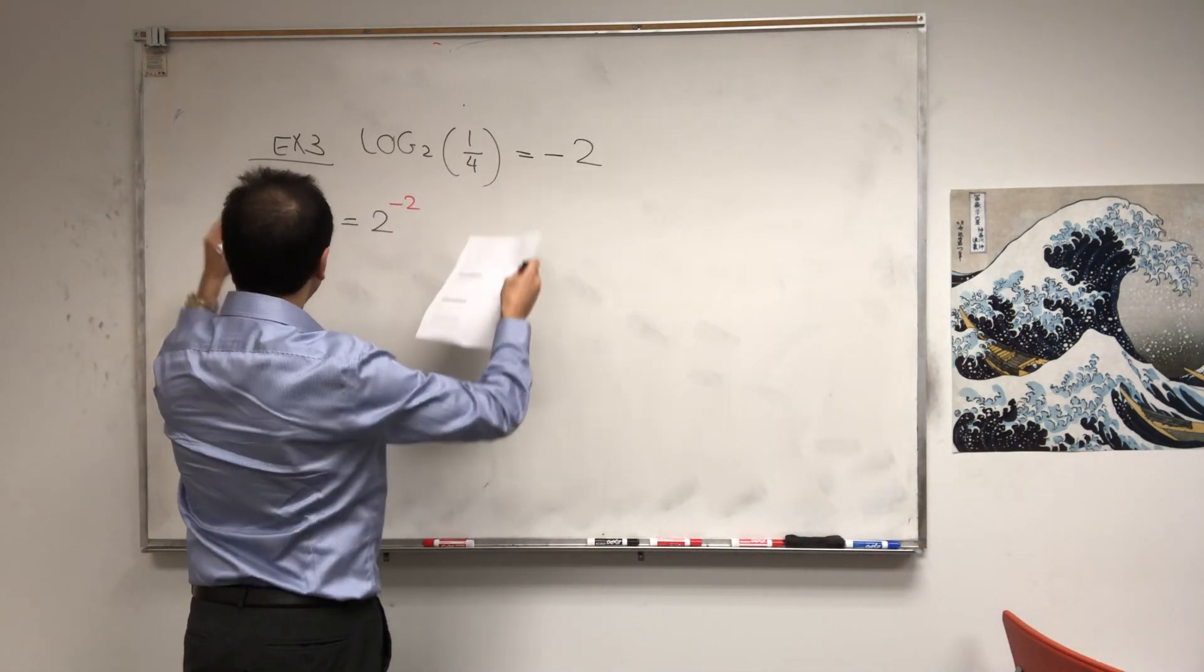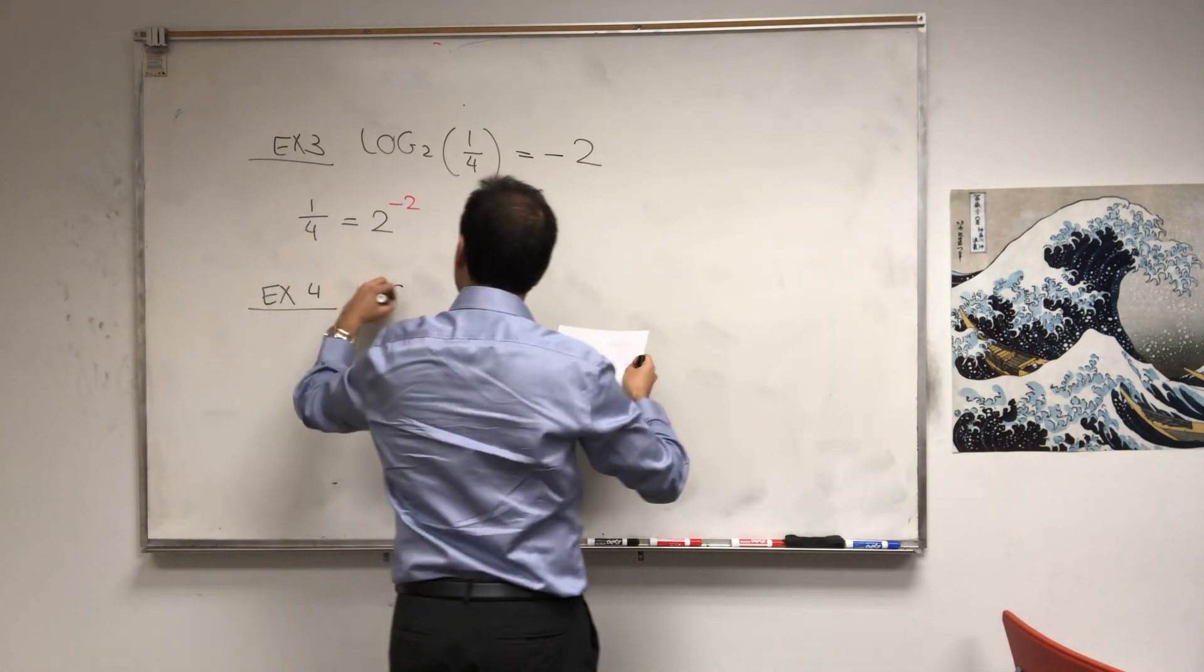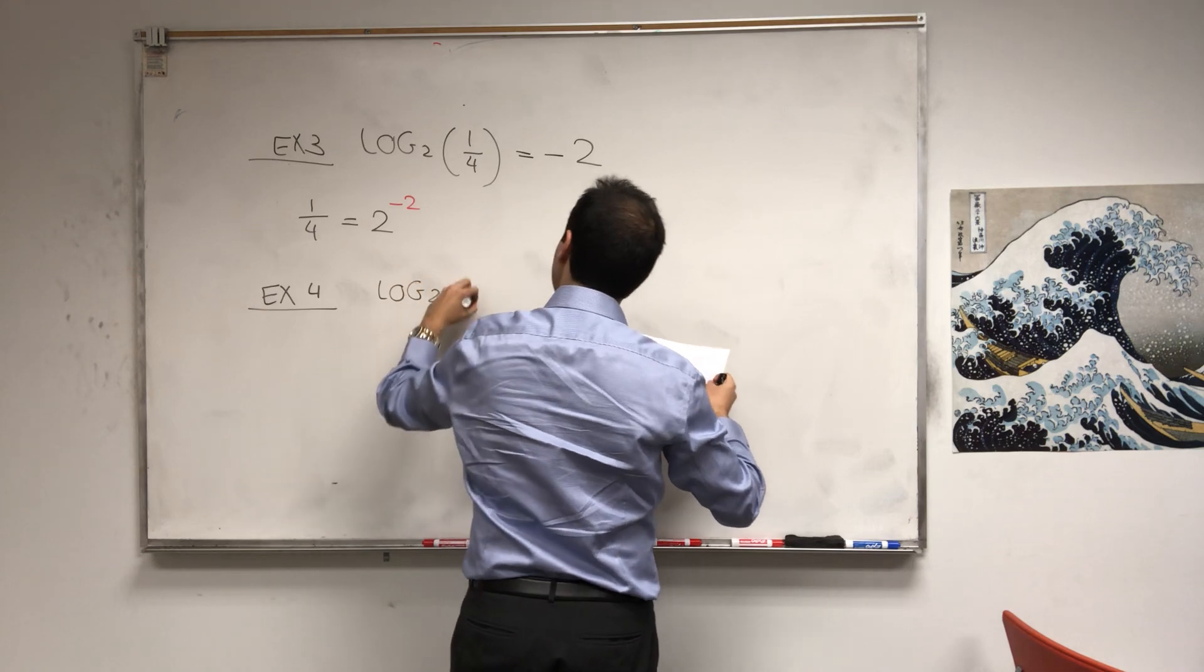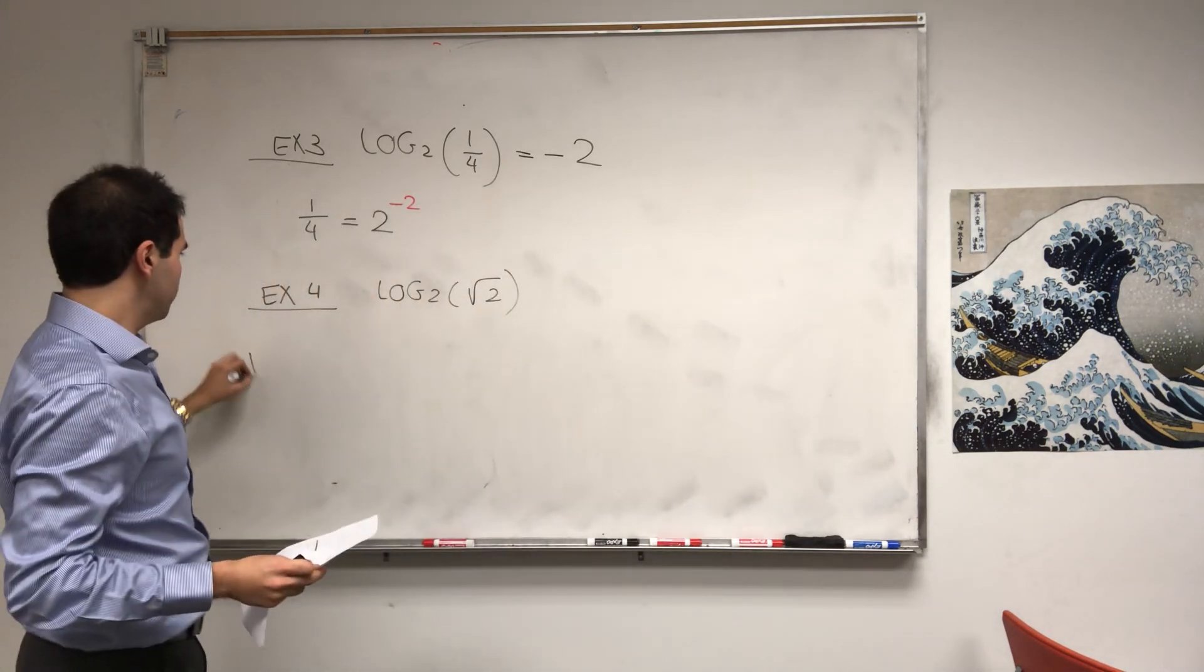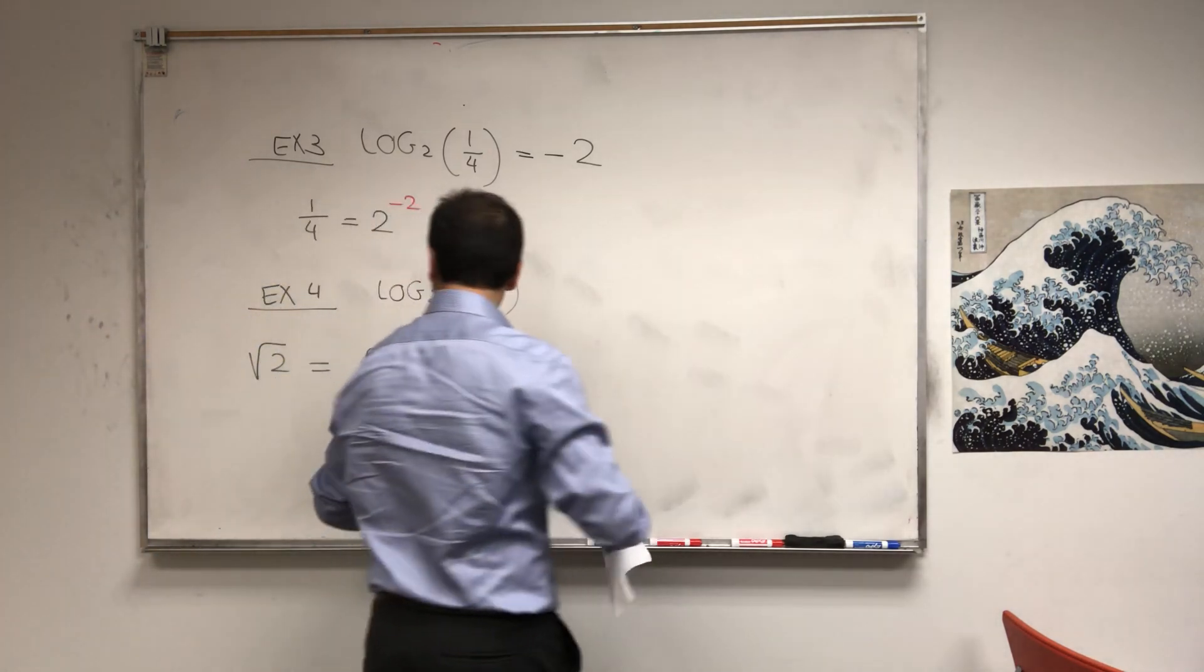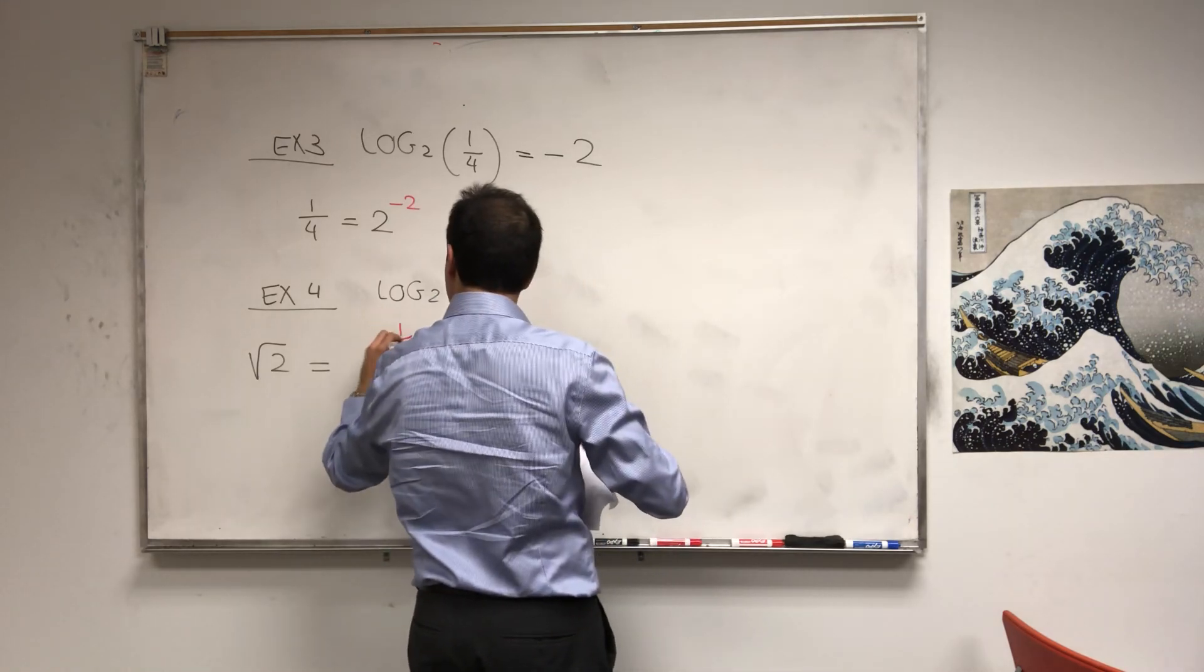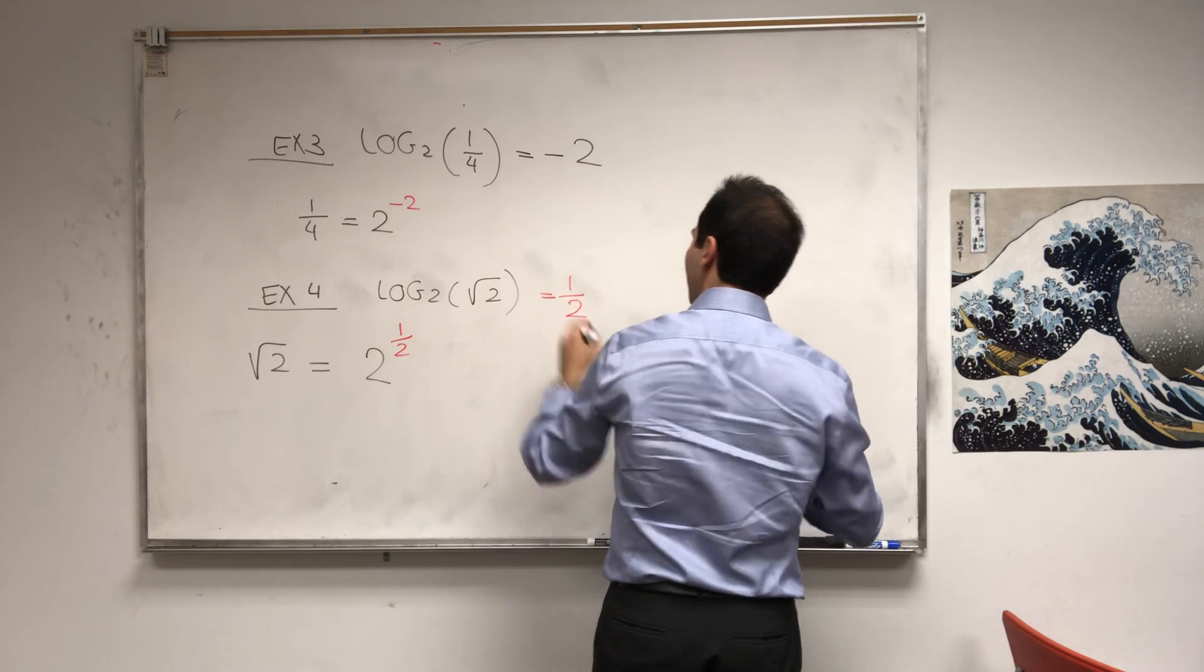Or, you see it works not only for non-integers, but also for square roots. So, how about log base 2 of square root of two? Again, square root of two, it's 2^(1/2). So, log base 2 of square root of two is one-half.